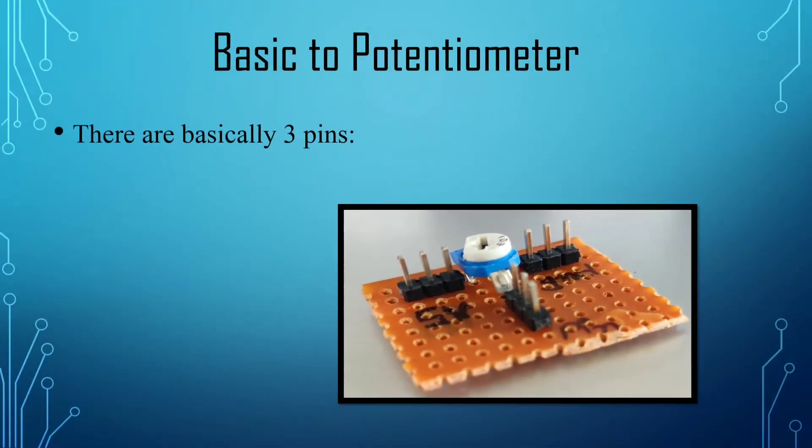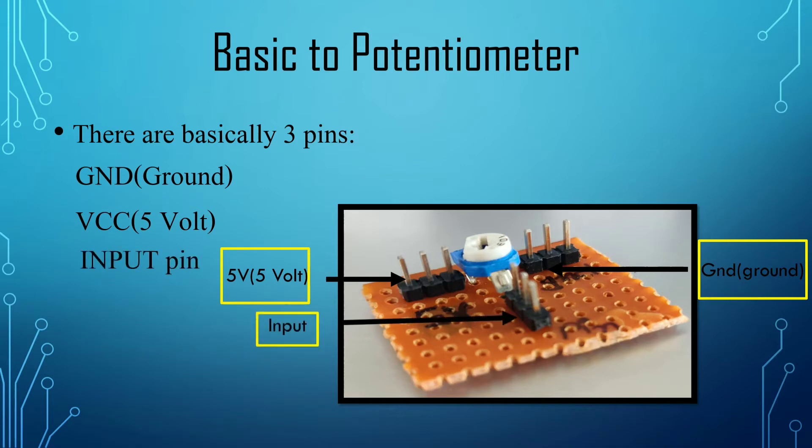There are basically three pins in potentiometer. First is ground, second is 5V and third is the input.